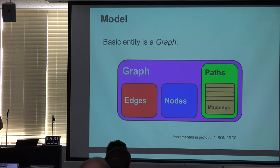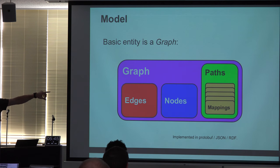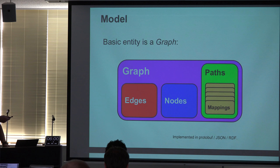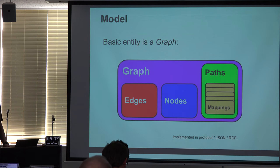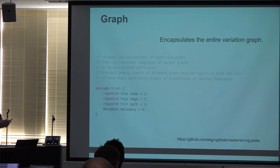Now I'll get into technical detail, because I think most of the audience wants that. The model is that we have a graph comprised of edges, nodes, and paths. The paths are rather complex. Effectively a path is a series of mappings across nodes — a walk through the graph. This is actually a whole data schema written in protobuf, which is a schema description language. You write a document in this language and compile it into various programming languages to make APIs to read and write these kinds of data. A graph is a vector of nodes, edges, and paths, and we can apply arbitrary annotations to everything.